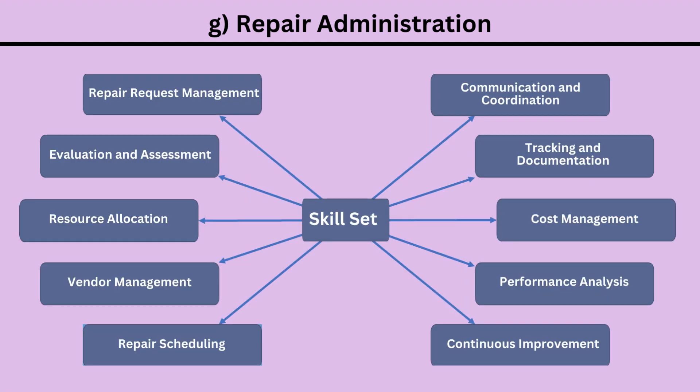Here are more details about construction equipment repair administration: 1. Repair request management. 2. Evaluation and assessment. 3. Resource allocation. 4. Vendor management. 5. Repair scheduling. 6. Communication and coordination. 7. Tracking and documentation. 8. Cost management. 9. Performance analysis. 10. Continuous improvement.